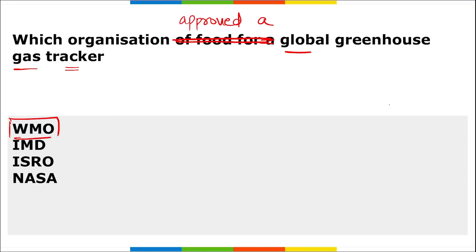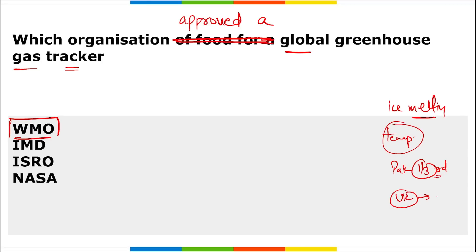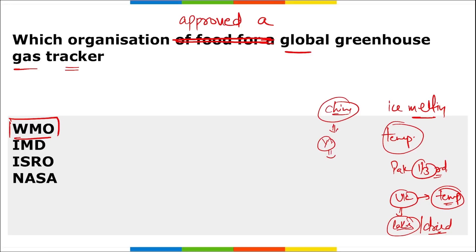This monitoring initiative supports urgent action to reduce heat-trapping gases fueling temperature rises. Because of this temperature increase, ice is melting in polar regions and we are seeing climate change. Examples include: almost one-third of Pakistan was underwater last year; UK temperatures rose to record highs and lakes dried up; China's Yangtze River also dried up. To track greenhouse gas emissions, this tracker was recently approved by WMO.